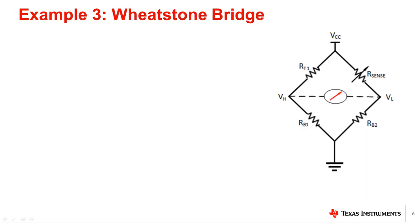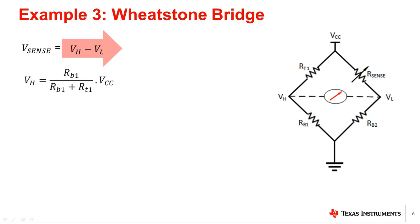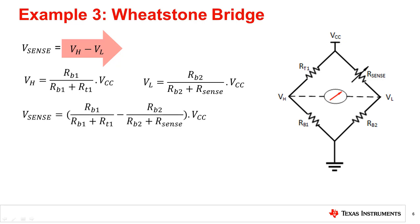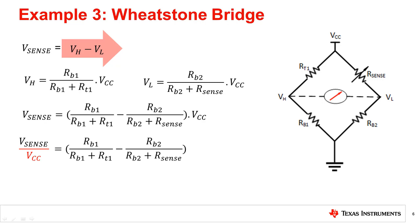In the next example, we take a Wheatstone bridge, which is commonly used to measure strain, load, pressure, and temperature. As given in the equation, the measurement is done across the voltage points VH and VL. Any variation in our sense will introduce a voltage change across VH and VL. Furthermore, there is a linear relationship between the sense voltage and VCC. Therefore, this circuit is susceptible to external variations in VCC and can be reconfigured using the ratiometric method to negate the effect of the varying supply voltage on the sensor measurement error.